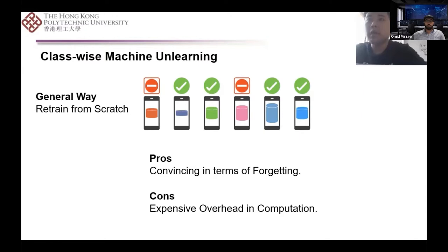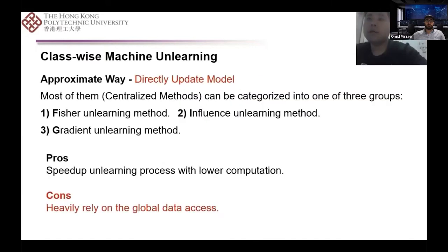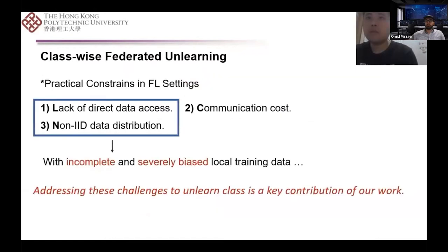However, the computational and time overhead associated with fully retraining models can be expensive. Approximate unlearning methods produce models that are approximations of the fully retrained models. Most of them can be used in a centralized machine learning setting and can also speed up unlearning with lower communication overhead. However, the limitations are significant because they heavily rely on global access to the training data. Current centralized learning methods are not suited to handle the system challenges of federated learning, including lack of direct data access, communication costs, and non-IID data. Addressing these challenges is a key contribution of our solution.